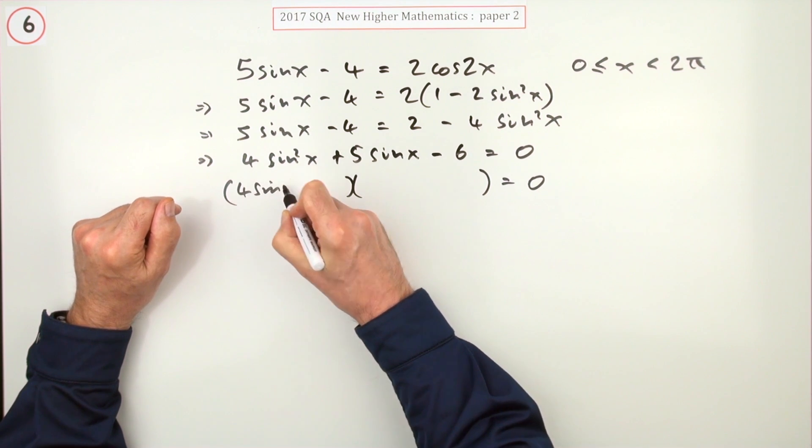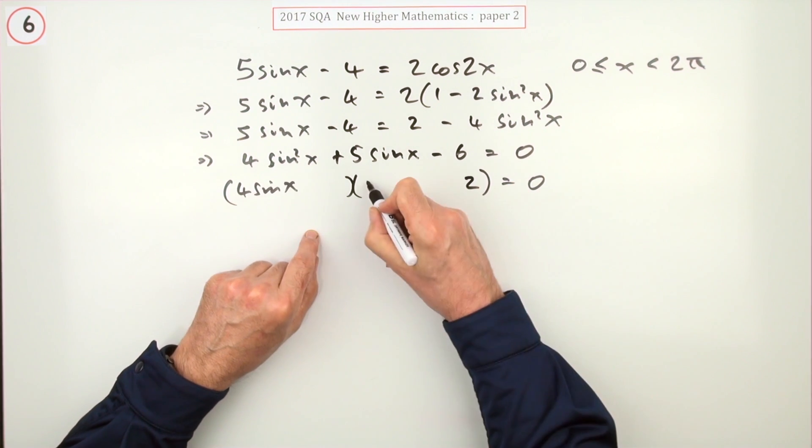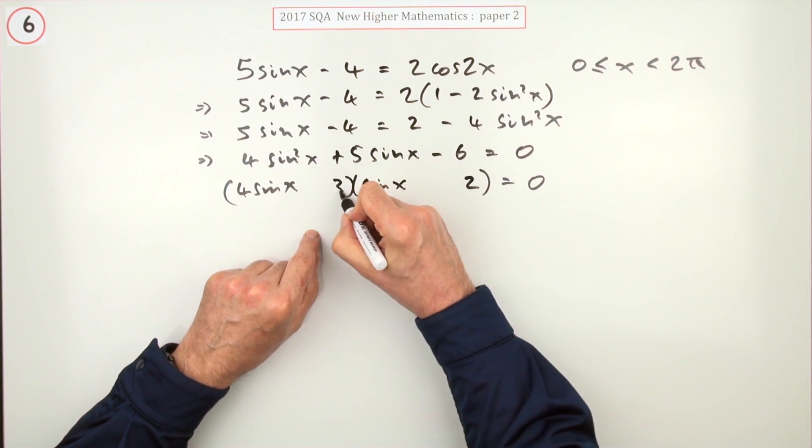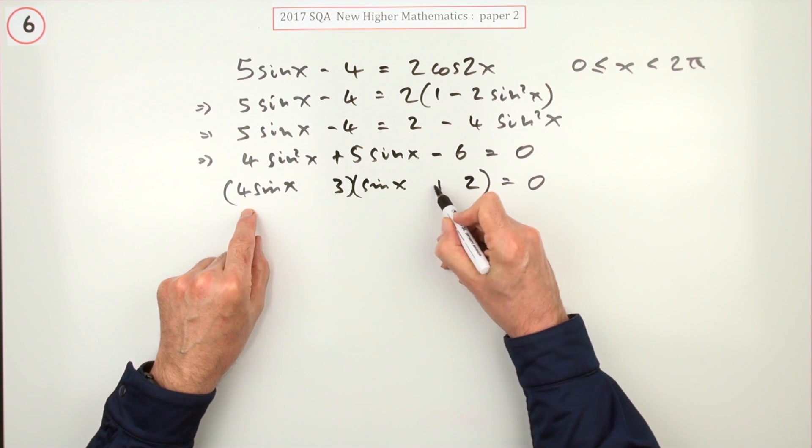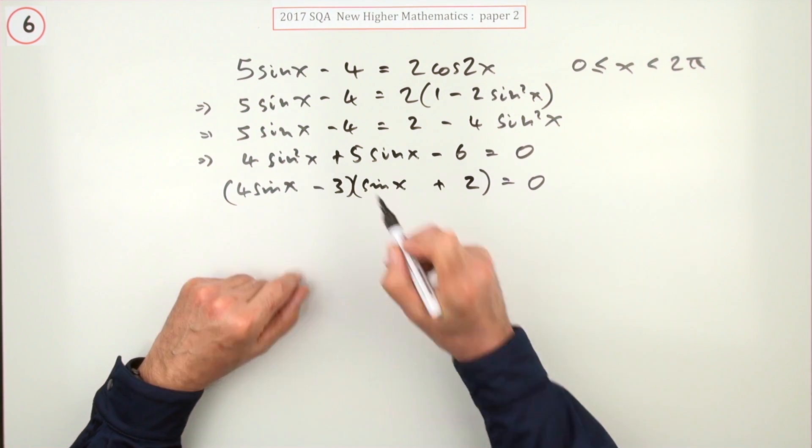4sinx times 2sinx times 3, then you'll have plus eight minus three gives five.